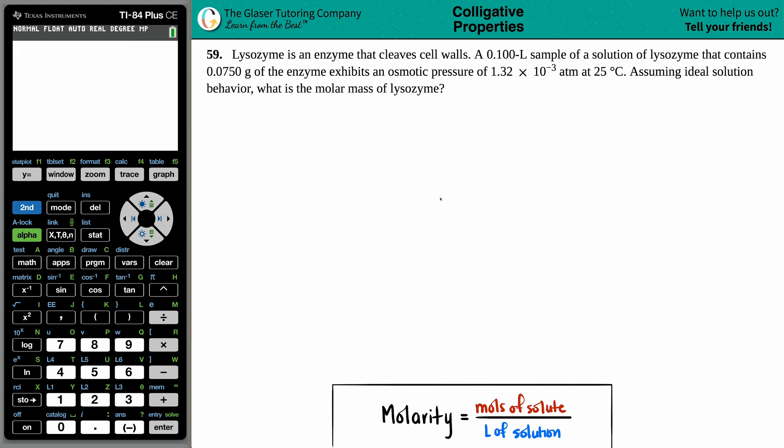Number 59. Lysozyme is an enzyme that cleaves cell walls. A 0.100 liter sample of a solution of lysozyme that contains 0.0750 grams of the enzyme exhibits an osmotic pressure of 1.32 times 10 to the negative 3 ATMs at 25 degrees Celsius.